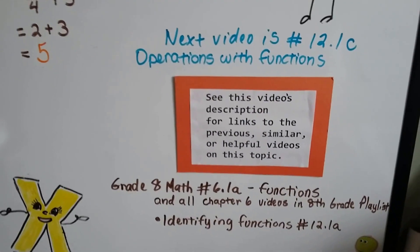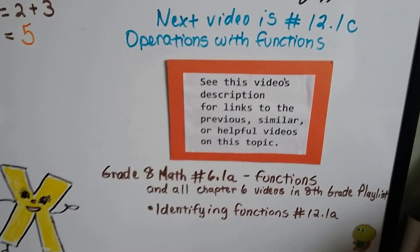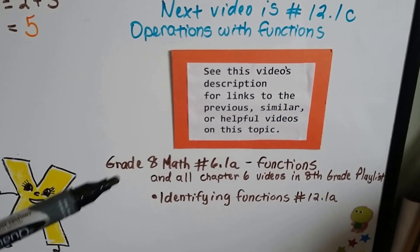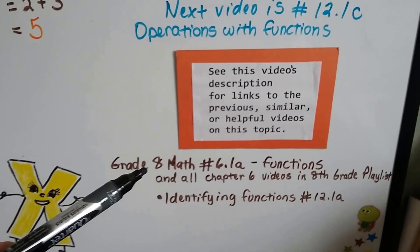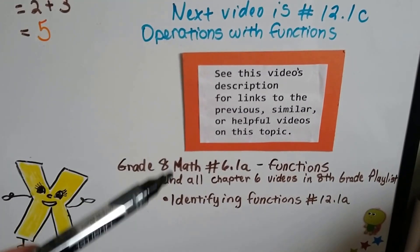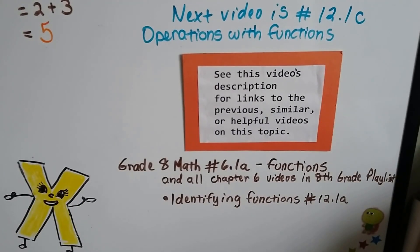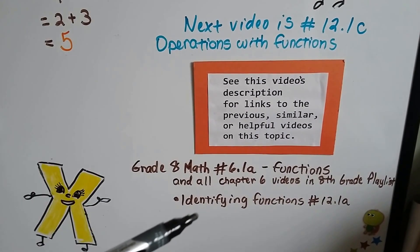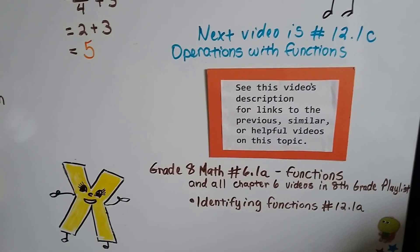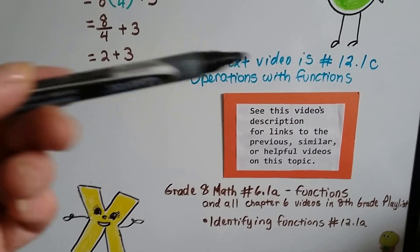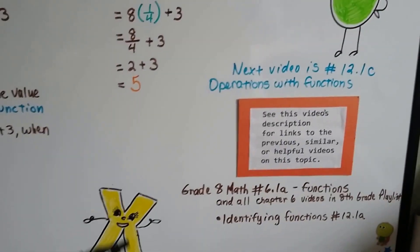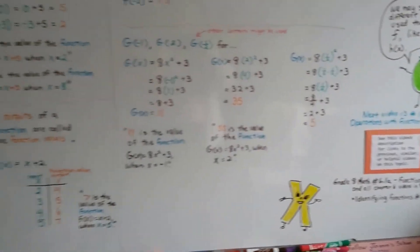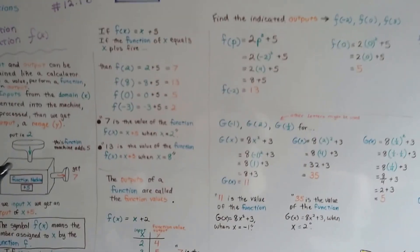Alright, our next video is 12.1c. We're going to talk about operations with functions. And in my grade 8 math playlist, there's going to be a link in this description. There's a whole chapter 6 about functions. It might be explained a little bit easier for you. And there's also a link to identifying functions, which was our previous video. But we're going to continue talking about functions in this chapter 12. We're going to talk about the relations of them. So you have a choice of going to the grade 8 math and watching it, or continuing on in Algebra 1 and watching it.